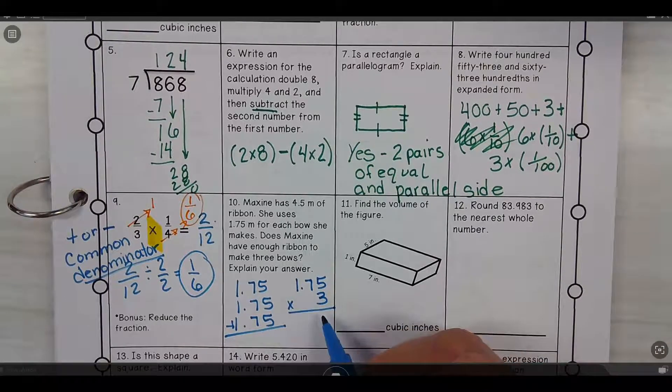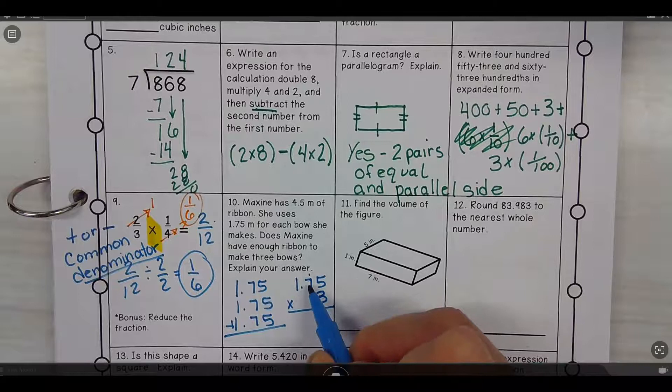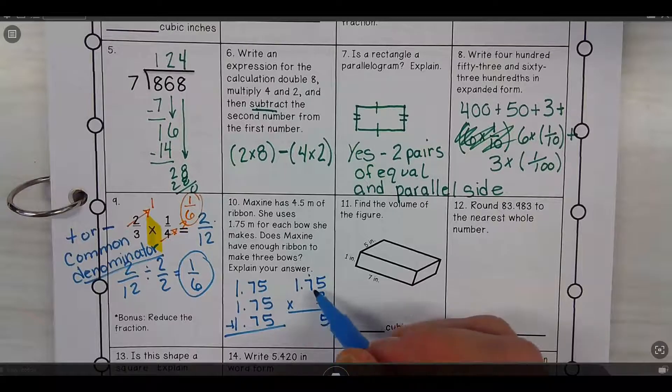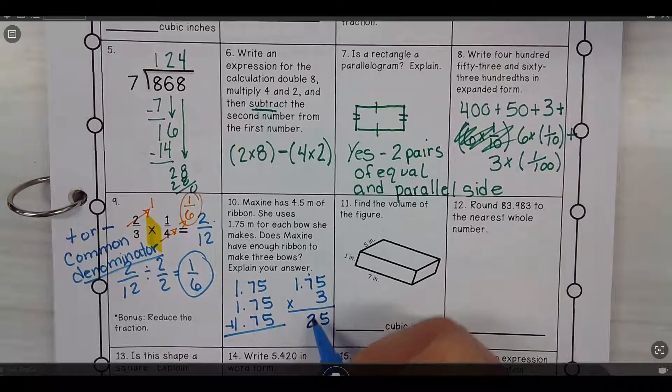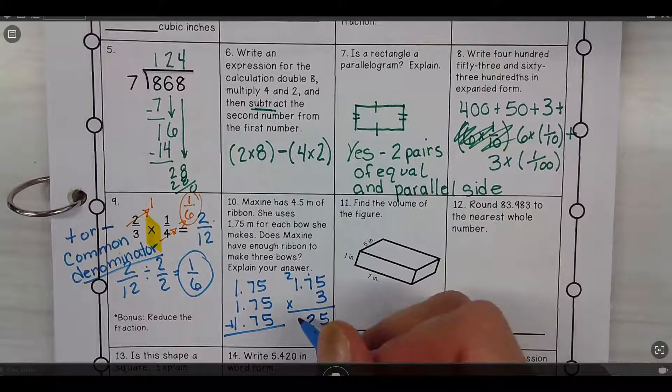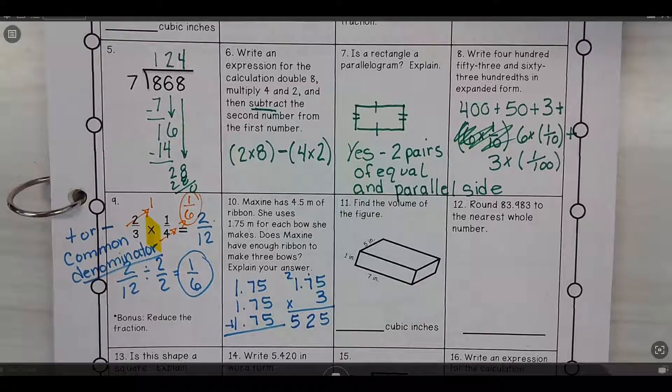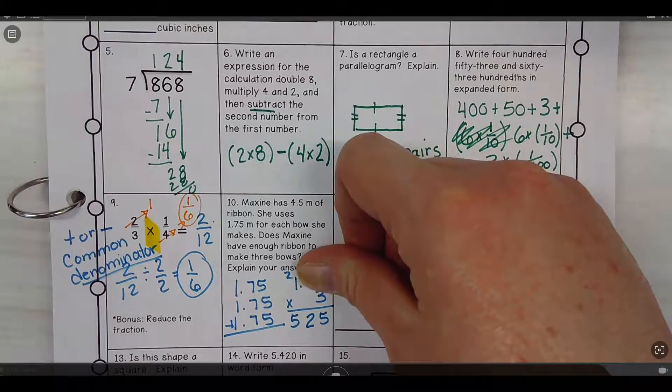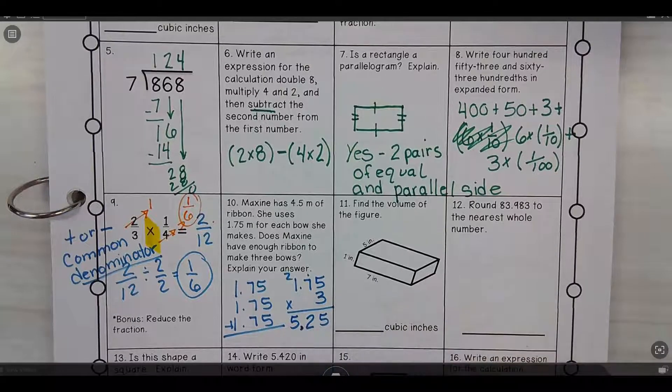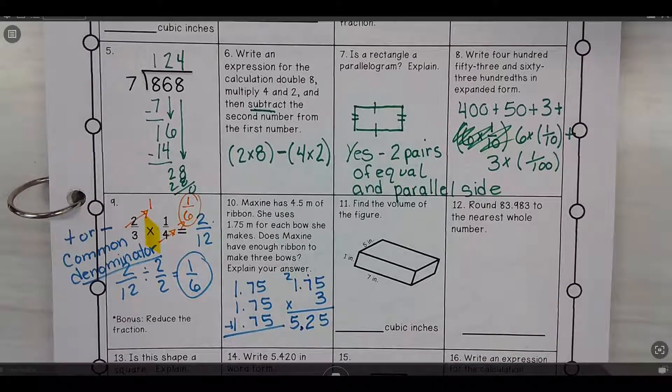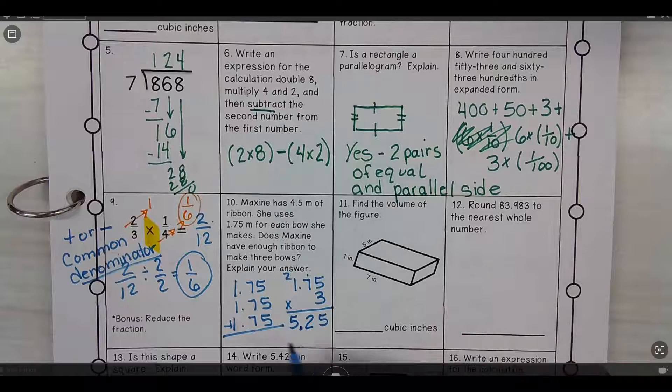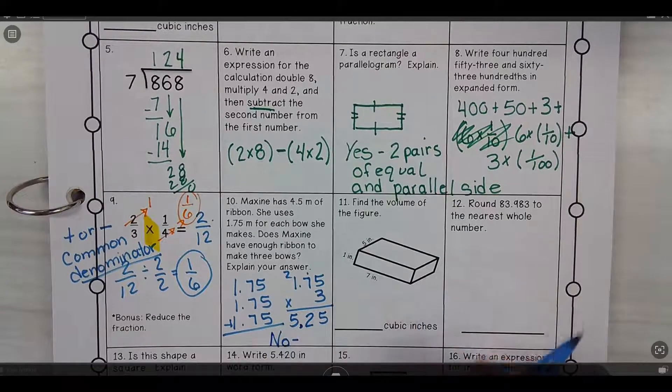Three times five is 15, carry my one. Three times seven is 21, plus one is 22, carry my two. Three times one is three, plus two is five. And then, my Mr. Osterner trick was to cover up the decimals. So I have three times one. Three times one gives me three. So the ballpark should be, the decimals should go there. So then the question becomes, does she have enough if she has 4.5 meters? No, she doesn't have enough to make all three bows.